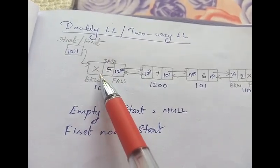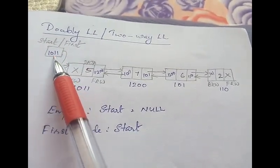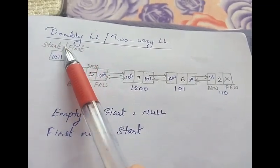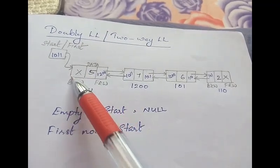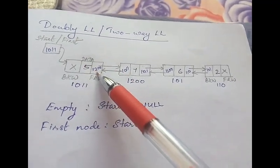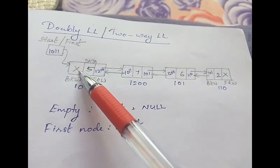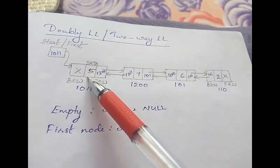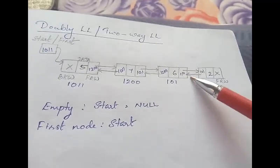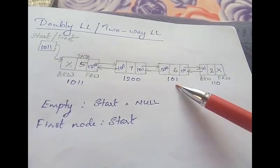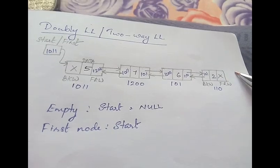The forward link stores the address of the next node, and the backward link stores the address of the previous node. The pointer to the list is 'start' or 'first', pointing to the first node. In this example the first node's data is 5, the forward link is 1200 (address of the next node), and the backward pointer is null because there is no previous node. In the last node, the backward pointer stores the address of the previous node, and the forward pointer contains null, meaning there is no node after it.